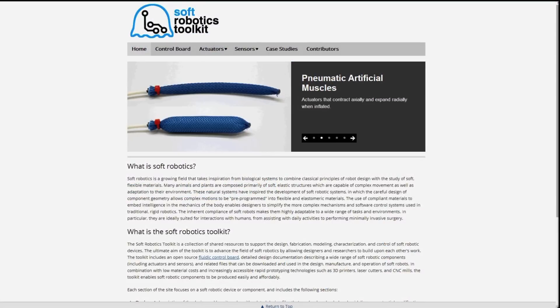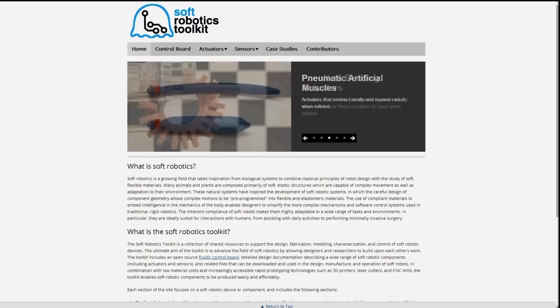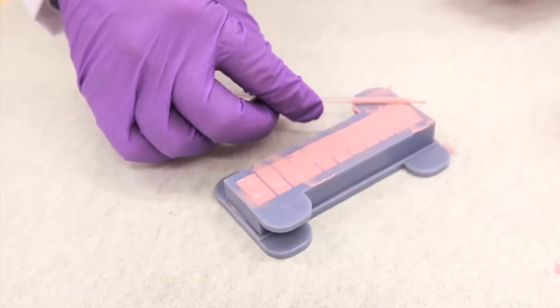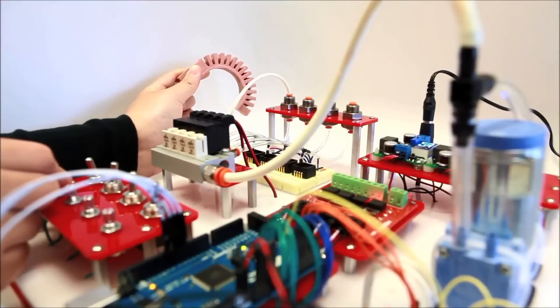The Soft Robotics Toolkit is a website that contains all of the information required to design, build, and operate soft robots.